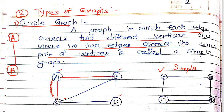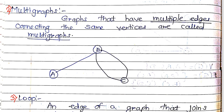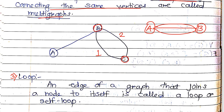The second type is multi graph. Graphs that have multiple edges connecting the same set of vertices are called multi graphs. In this figure, from vertex B to C you find two parallel edges. So a graph in which multiple edges connect the same set of vertices is called a multi graph. Even if there are three edges between vertex A and vertex B, we call it a multi graph.